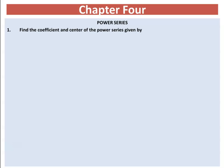Let's now find the coefficient and center of the power series. The method: a series is made by a certain expression of n, times (x minus c) to the power of n. We call it a power series. The coefficient of the power series is the term written before the bracket without having x — so it is e to the power of n over n factorial.